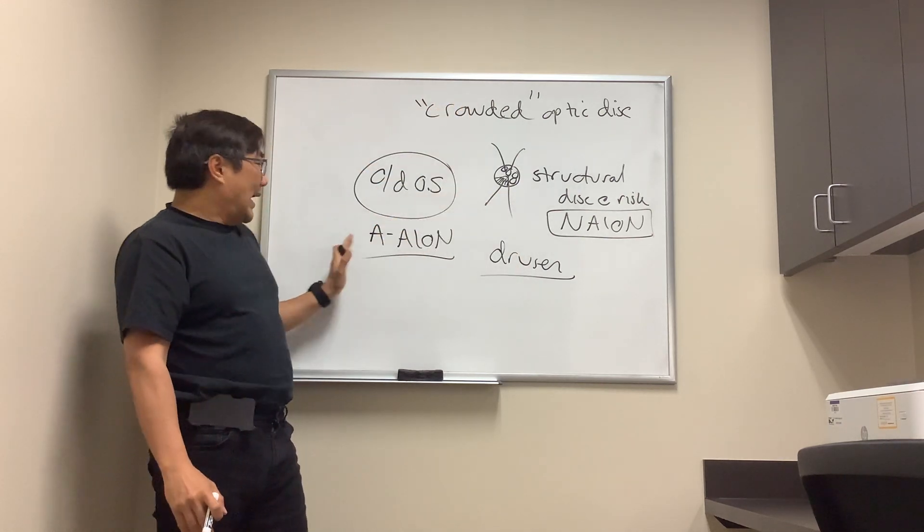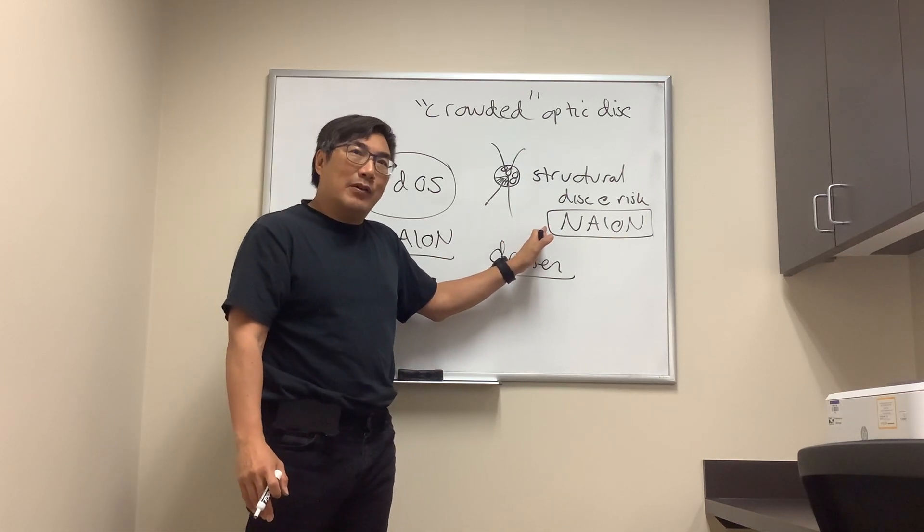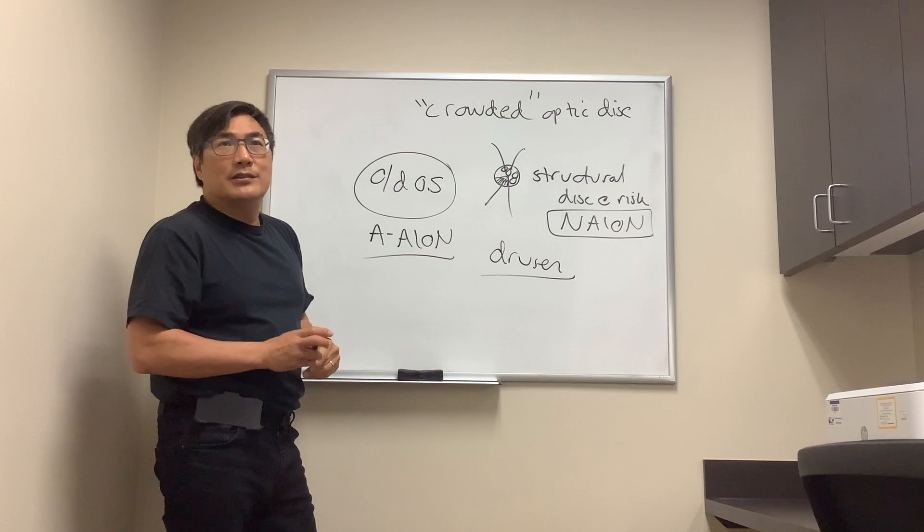If we don't see it, AAION should be on the differential. If we do see it, more likely to be NAION. And that's how we use the crowded optic disc in neuro-ophthalmology.